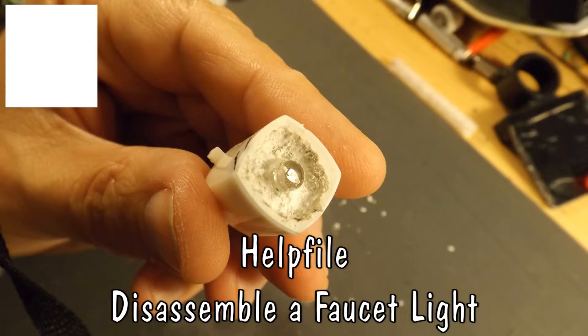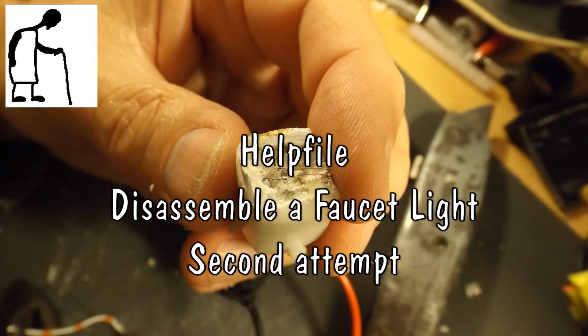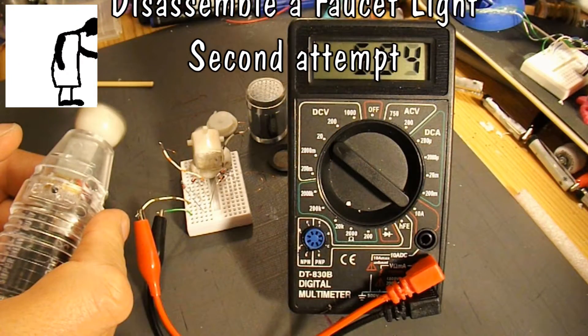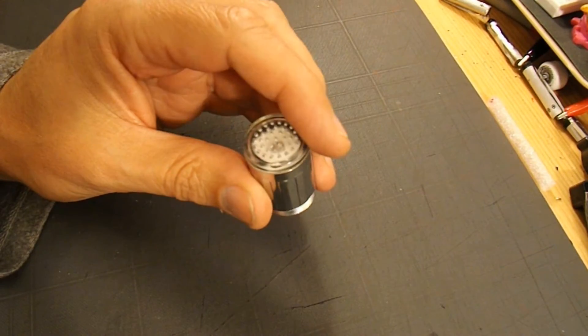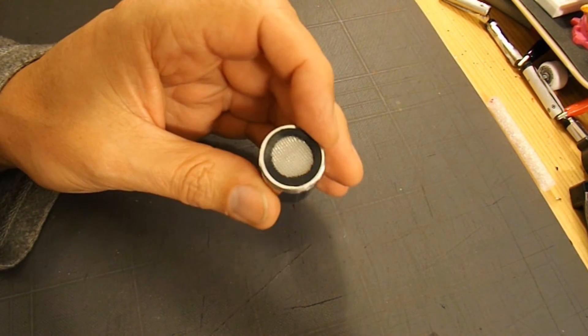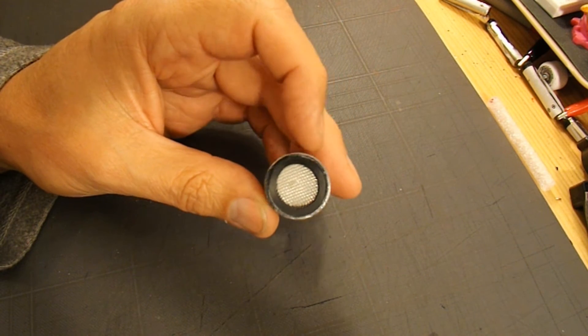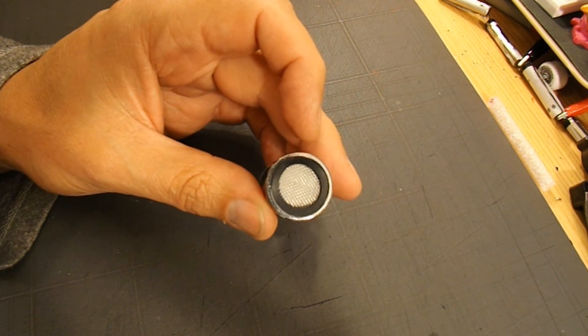Hi guys. I'm going to have another go at trying to take one of these faucet lights apart to get the little generator out from inside. If you saw my last video on the subject, I failed. So we're going to have another go and see if I learnt anything the first time.